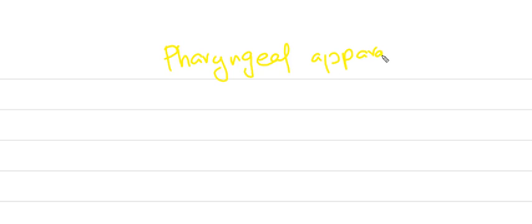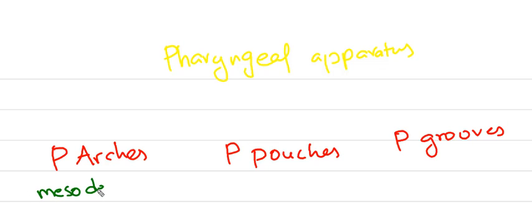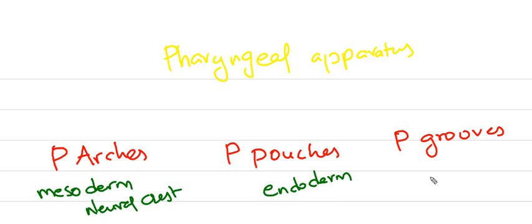Hi friends, today I am going to discuss about pharyngeal arch. Before proceeding to that, you have to remember pharyngeal apparatus which is present in our intrauterine life. It is composed of pharyngeal arch, pharyngeal pouches, and pharyngeal grooves. Pharyngeal arch is mostly composed of mesoderm and neural crest cells, whereas pharyngeal pouches are composed of endoderm and pharyngeal grooves are composed of endoderm.